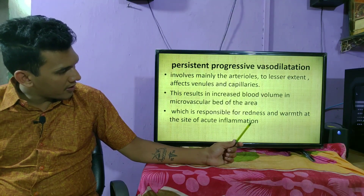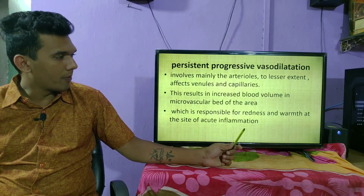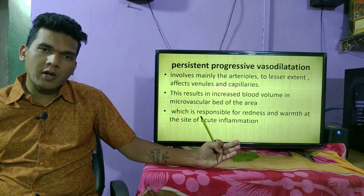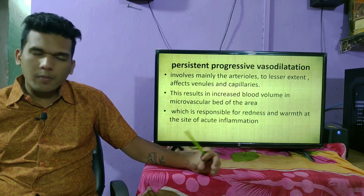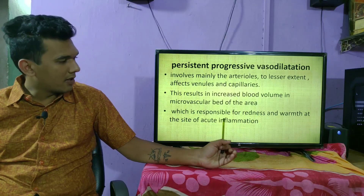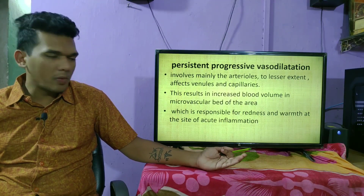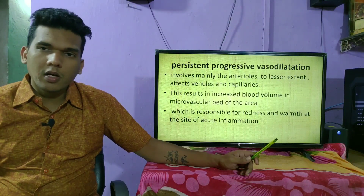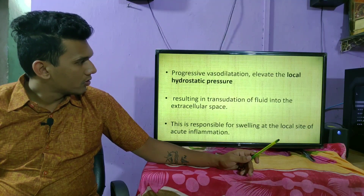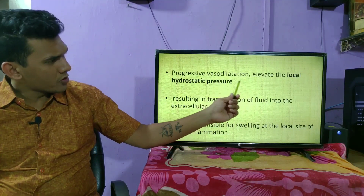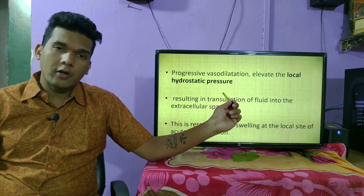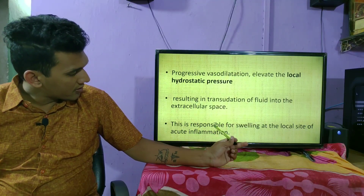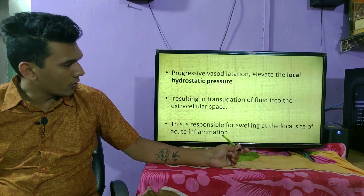This increased blood supply and increased blood volume is responsible for the redness and warmth at the site of acute inflammation. Blood accumulates in that area because the veins and capillaries are not adequately taking it away, giving rise to the redness due to the red color of blood and warmth due to blood collection. Progressive vasodilatation also elevates the local hydrostatic pressure, resulting in transudation of fluid into the extracellular space, which is responsible for swelling at the local site of acute inflammation.